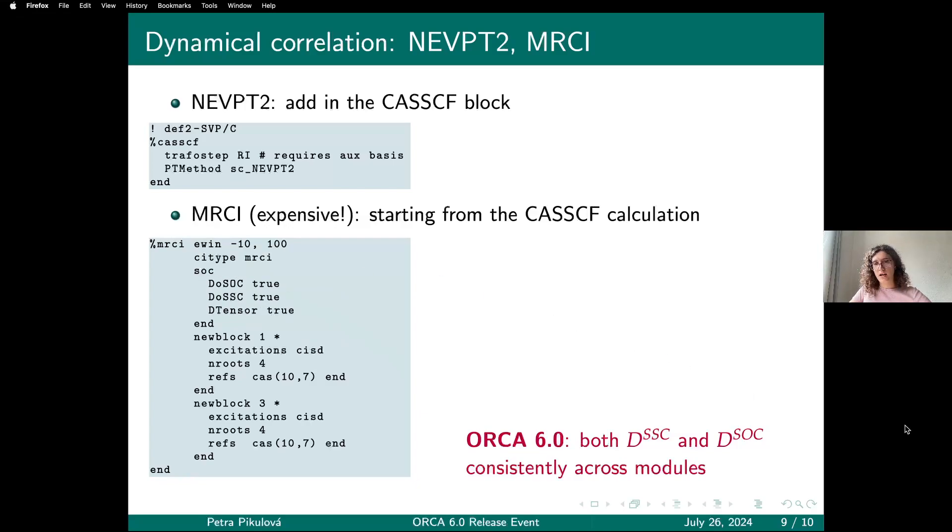I will not show you the output per se because I just want to highlight that since ORCA 6, the output from all modules that are capable of doing QDPT calculations has been really unified. Now if you ask for it, both the spin-spin and the spin-orbit coupling contributions should be consistently included so that you can make quite direct comparisons between results from different modules.